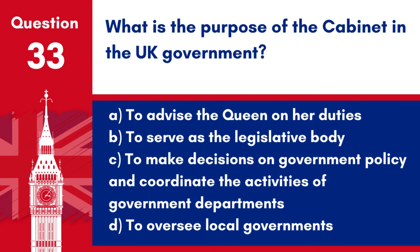Question 33: What is the purpose of the Cabinet in the UK government? a. To advise the Queen on her duties. b. To serve as the legislative body. c. To make decisions on government policy and coordinate the activities of government departments. d. To oversee local governments. Answer: c. To make decisions on government policy and coordinate the activities of government departments. The Cabinet is composed of the Prime Minister and top government officials, playing a central role in the UK's government.